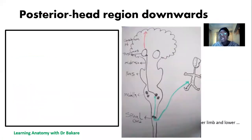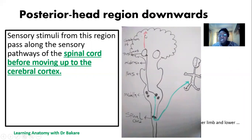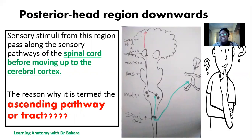So the posterior head region downwards is supplied by the spinal nerves. This is the configuration of the body — the anterior upper head, the face, and the posterior region downwards. This is where the stimuli are taken and they run through to enter into the spinal cord. From the spinal cord, they need to ascend upward to reach the cerebral cortex where the sensation will be interpreted. So we can imagine these sensory stimuli entering the spinal cord and needing to run their course upward — this is the ascending pathway.